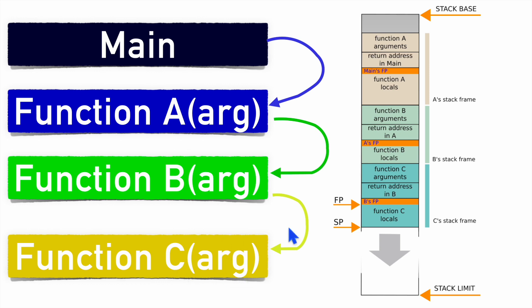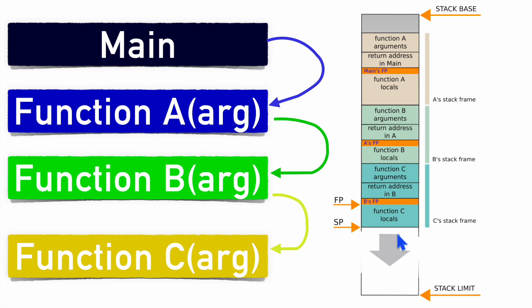For function C, its arguments are stored, then the return address of function B is stored — so after function C completes, execution returns to function B. Local variables of function C are also stored in its frame. After all frames are pushed, the stack pointer points to the next available location in stack memory. This is how stack memory stores local variables, arguments, and return addresses of caller functions.